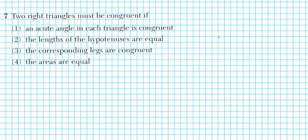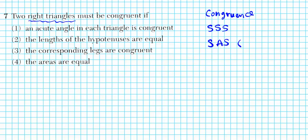Let's take a look at question 7. It says two triangles must be congruent if... Before we start, let's review the congruency postulates and theorems: SSS (all three sides congruent), SAS (two sides and included angle congruent). A special case of SAS for right triangles is HL — the Hypotenuse-Leg theorem. We also have ASA and AAS.